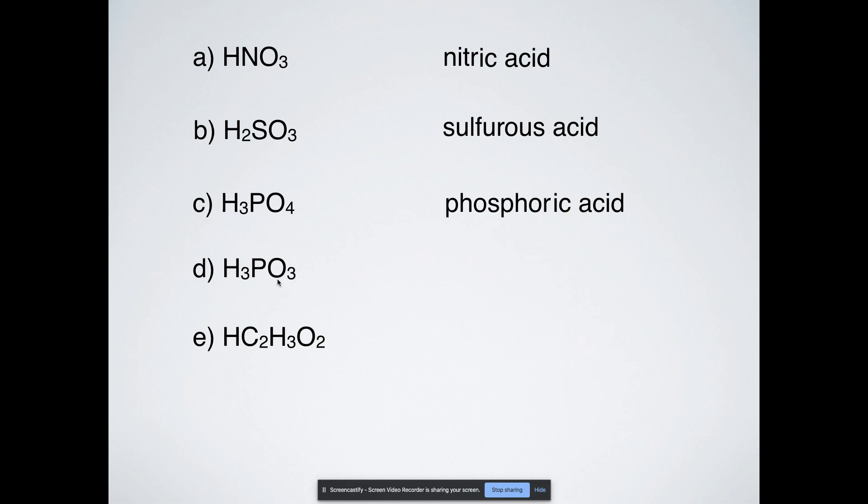Let's see if we can do with one less oxygen. So that means that's phosphite. This becomes an -ous acid. That would be phosphorous acid.